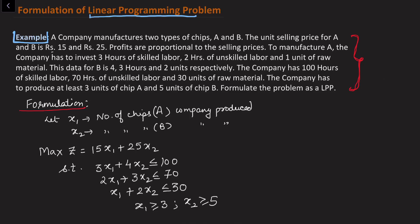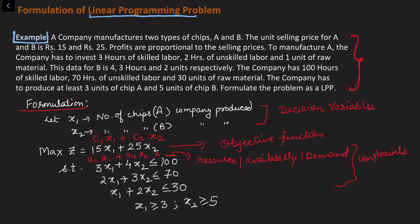This is the formulation for the above problem. I have extracted data from the paragraph form and formulated the problem. The first thing I decided was the decision variables. The objective function has cost coefficients c1 and c2 multiplied by the respective decision variables. The constraints have coefficients multiplied by decision variables on the left-hand side, and the right-hand side represents availability, resource limits, or possibly demand.